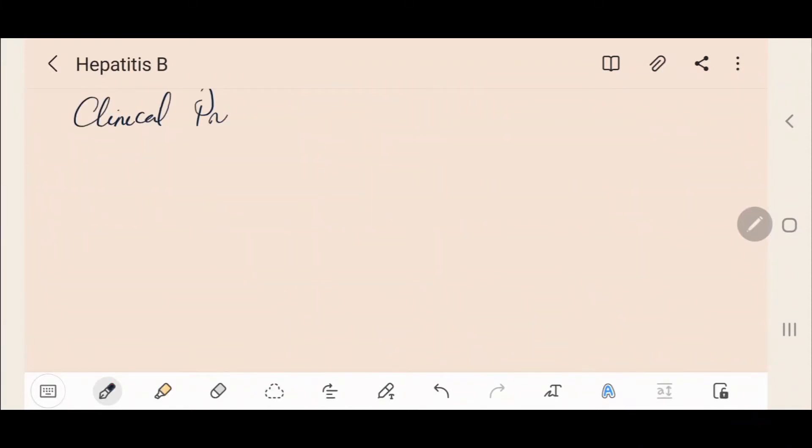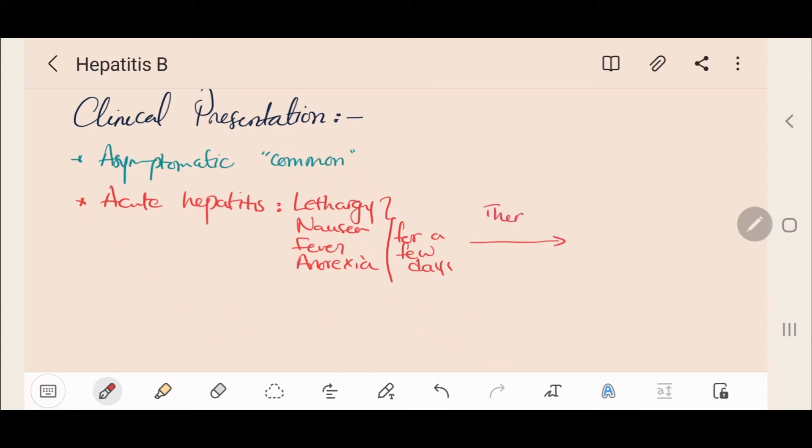Hepatitis B is commonly asymptomatic. In acute Hepatitis, lethargy, nausea, fever and anorexia start for a few days and then jaundice, pale stools and dark urine appear.